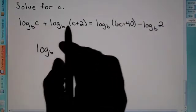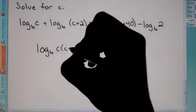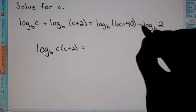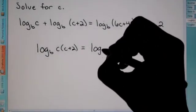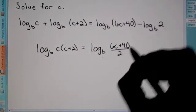So, therefore, the rule is when you have log plus log, you multiply the terms. So, c times c plus 2. Over here, we have log minus log. So, this becomes division. So, log b of 6c plus 40 divided by 2.